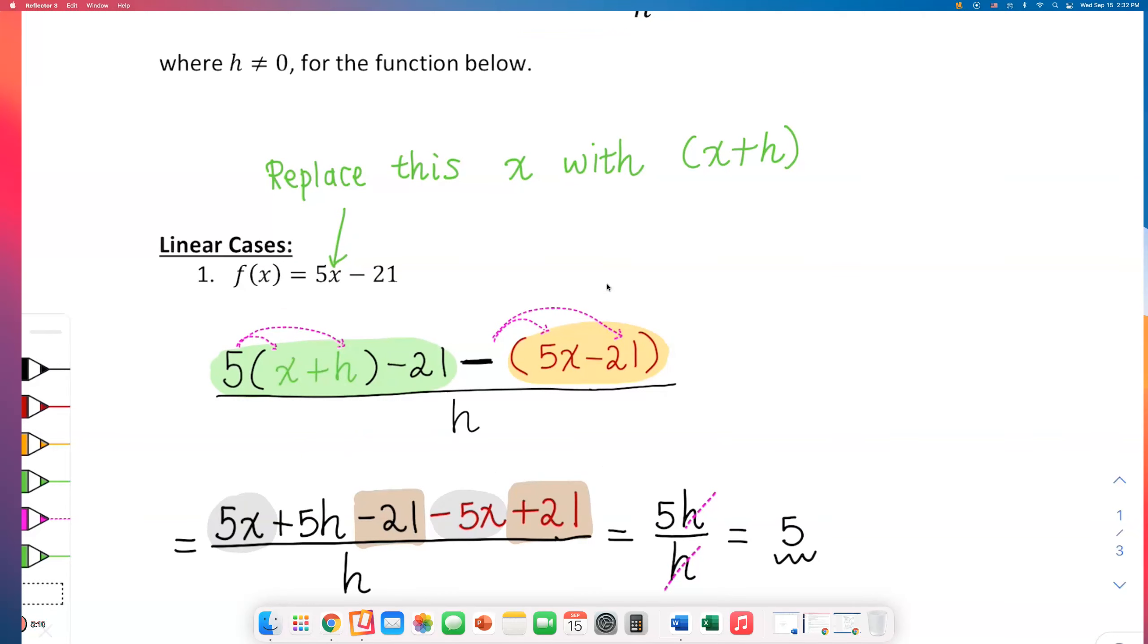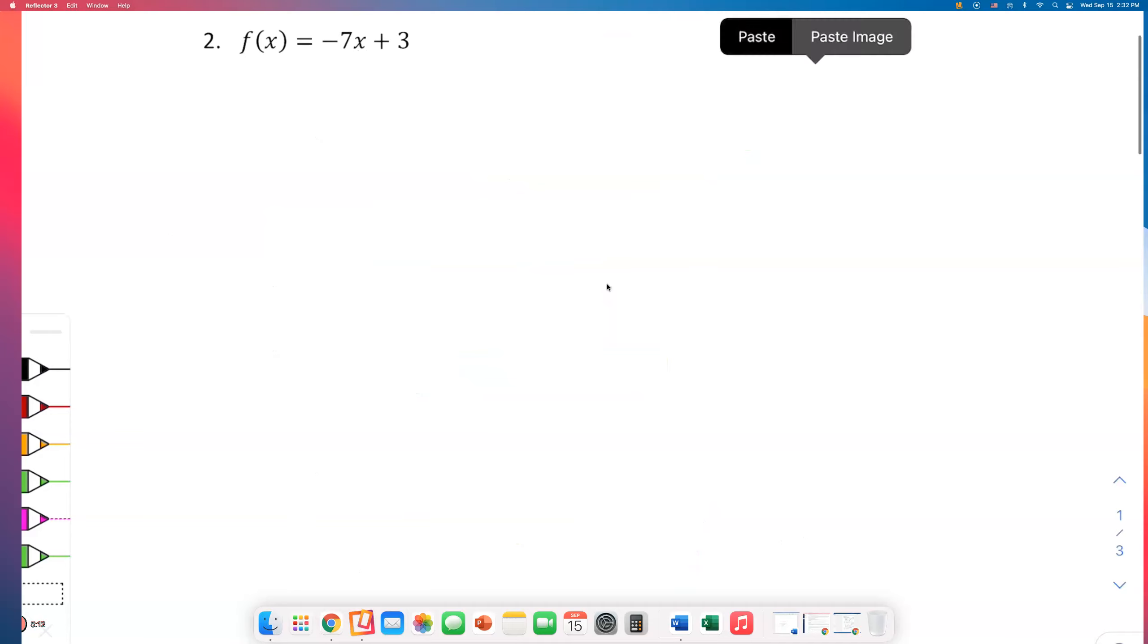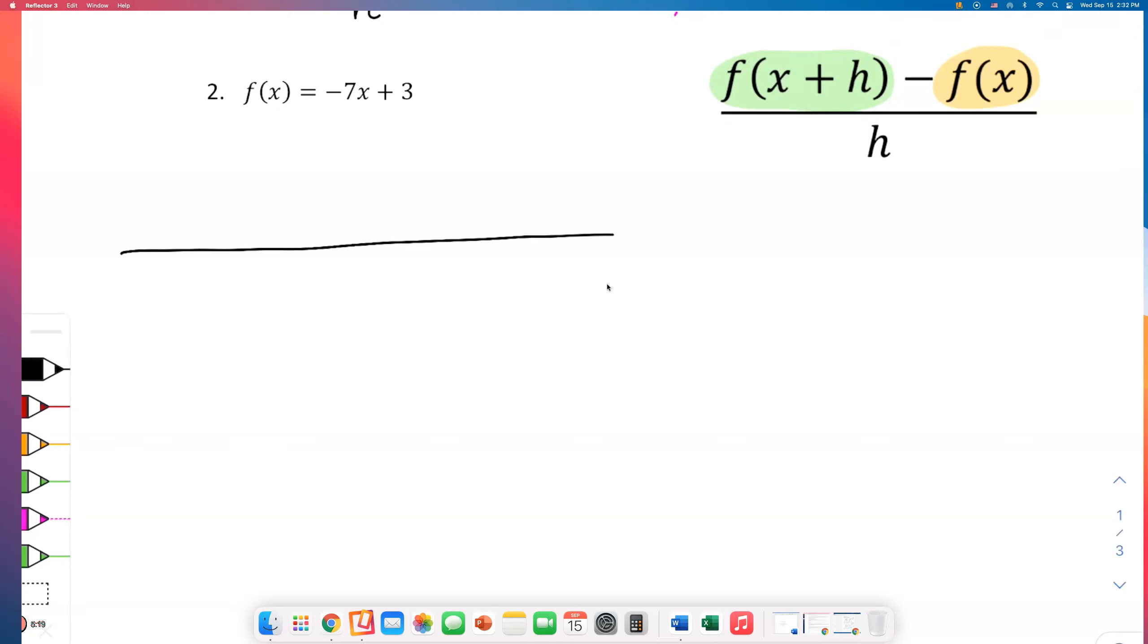So let's look at another example where we set up the difference quotient. First of all, I need to do a big fraction bar with h in the bottom. On top of the fraction I need to do f of x plus h. Where that x is, you're going to replace the x with x plus h. The big structure was negative 7x times something plus 3. We're going to plug in x plus h. I just wrote the green part.